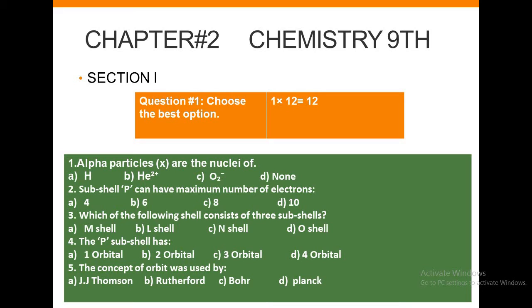Question number one: Choose the best option. Number 1: Alpha particles are the nuclei of: a) hydrogen, b) helium, c) oxygen, or d) none. Tell me the MCQs in the comment section. Number 2: Sub-shell P can have maximum number of electrons: a) 4, b) 6, c) 8, or d) 10.